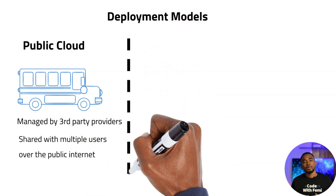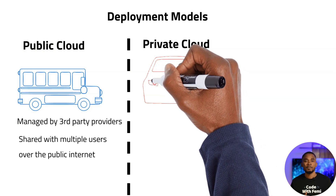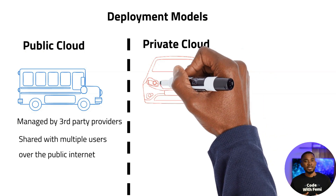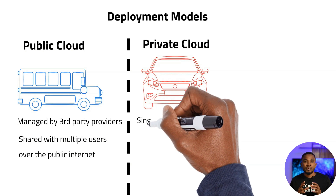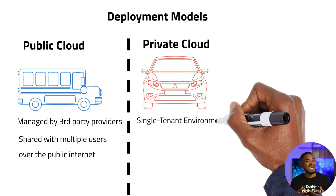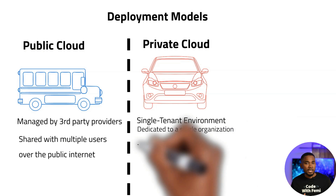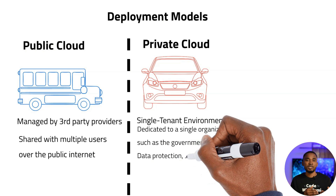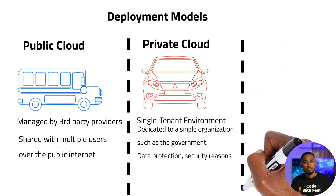The private model is like having your own private car that you use to commute to work. This relates to a cloud platform that is private and managed by just one organization. An example would be the government. You might wonder why we have private — it's because there are cases where you deal with policies, data protection, security, and many more reasons.